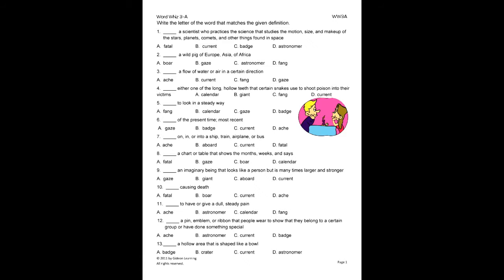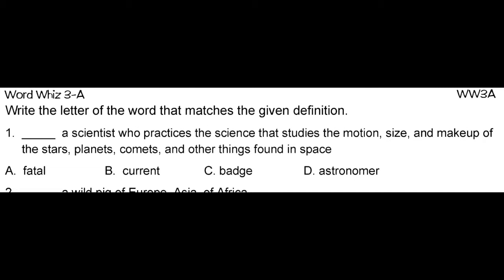On this first exercise, the student will write the letter of the word that matches the given definition. First, read the definition. A scientist who practices the science that studies the motion, size, and makeup of the stars, planets, comets, and other things found in space. Our answer choices are fatal, current, badge, and astronomer. Since we know this is the definition for astronomer, we will circle the correct answer and write the letter on the line.